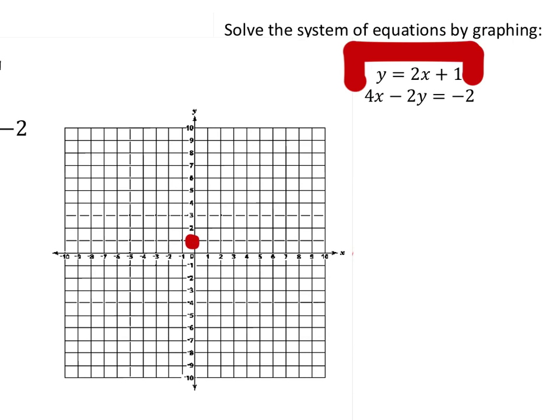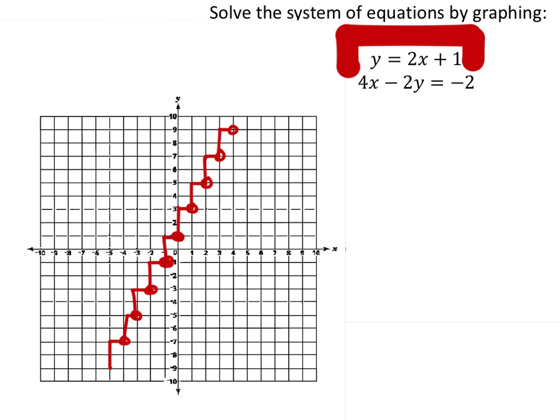We see that has a y-intercept of 1 and the slope is 2. So once again, I plot as many points as I can using the slope, and then I graph the line, which gives me something like this.